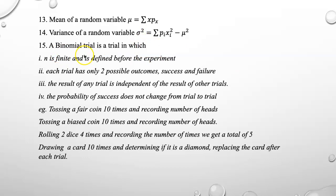A binomial trial is a trial in which n is finite and is defined before the experiment. Each trial has only two possible outcomes, success and failure. The result of any trial is independent of the result of other trials and the probability of success does not change from trial to trial.